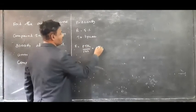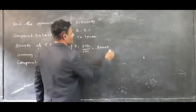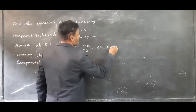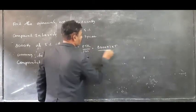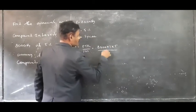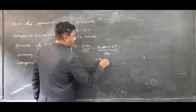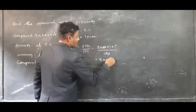I is equal to PTR by 100. P is 8000, T is 1 year, R is 5 by 100. Two zeros are cancelled. Interest equals 400 rupees.